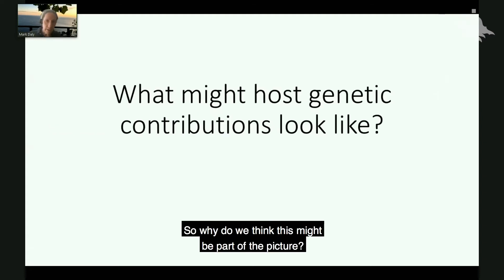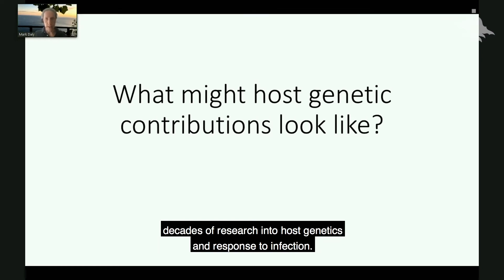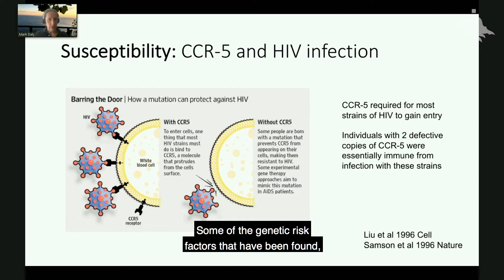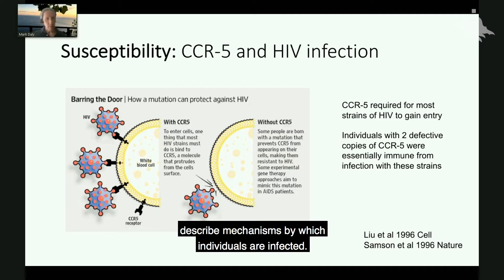So why do we think this might be part of the picture? Well, there's a long history over the past decades of research into host genetics and response to infection. Some of the genetic risk factors that have been found — for example, a certain gene named CCR5 and HIV infection — describe mechanisms by which individuals are infected.